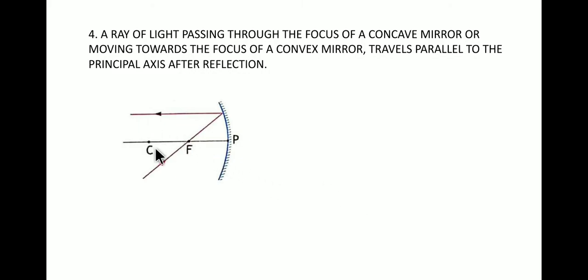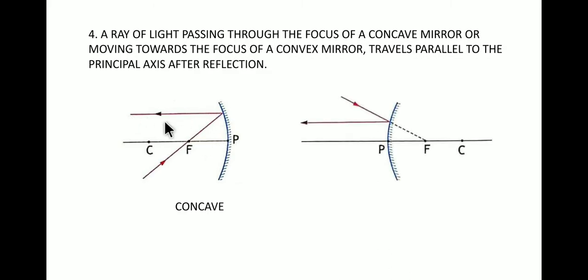Rule number four: a ray of light passing through the focus of a concave mirror, or moving towards the focus of a convex mirror, travels parallel to the principal axis after reflection. For a concave mirror, when light passes through the focus, after reflection it will be parallel to the principal axis. For a convex mirror, the light moves towards the focus but does not reach it; instead it reflects such that it travels parallel to the principal axis.